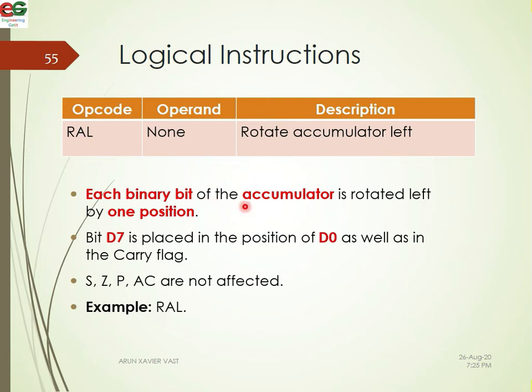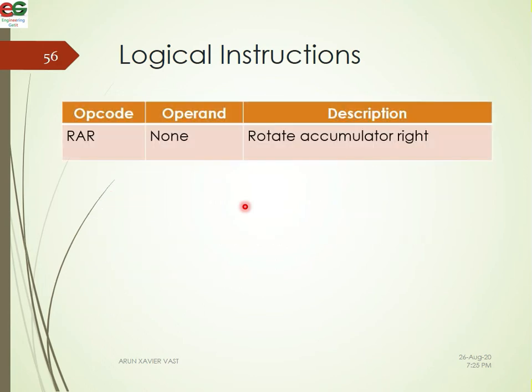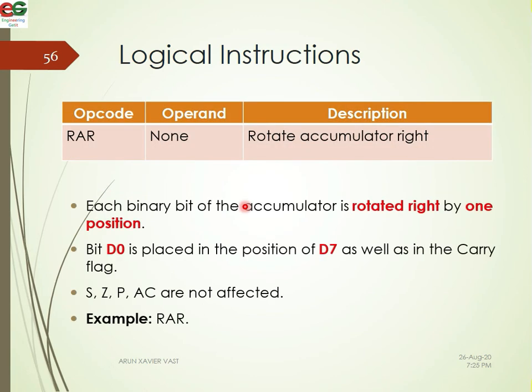The rotate left instruction (RLC) shifts all bits of the accumulator left by one position. Bit position 0 moves to position 1, position 1 to 2, and so on up to position 7, which wraps around to position 0. The rotate right instruction (RRC) rotates each bit of the accumulator right by one position.